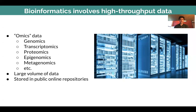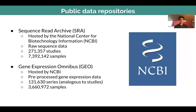In bioinformatics, we use high throughput data — we can call this omics data. It represents a bunch of different types of technologies and has different biological meanings. This data is large and we store it online in repositories. The two repositories we focus on for this project are the Sequence Read Archive and Gene Expression Omnibus, both run by NCBI. The main difference is that the Sequence Read Archive has more raw sequence data, while the Gene Expression Omnibus has more expression data, metadata, and things that have already been processed.